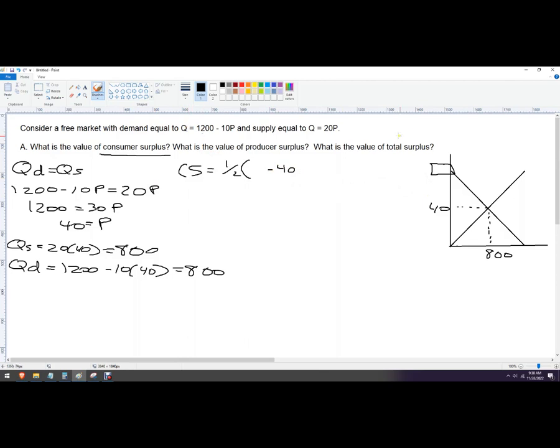So the most they're willing to pay is the price when quantity is zero. So we can find that by sending this over here. And we're going to set quantity equal to zero. And so this is zero equals 1200 minus 10p. We're going to add 10p to both sides. So we've got 10p equals 1200. And then divide both sides by 10. This is 120.